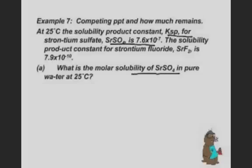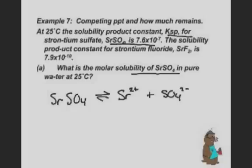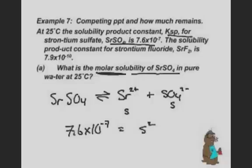So we know strontium sulfate, SrSO4, dissociates into Sr2+ plus the sulfate 2-. It's just finding the molar solubility. This is solving for S. The solubility of strontium sulfate that they gave us in the problem was 7.6×10^-7. That equals S squared. You just take the square root. S equals 8.7×10^-4 molar. And that is the molar solubility of the strontium sulfate.